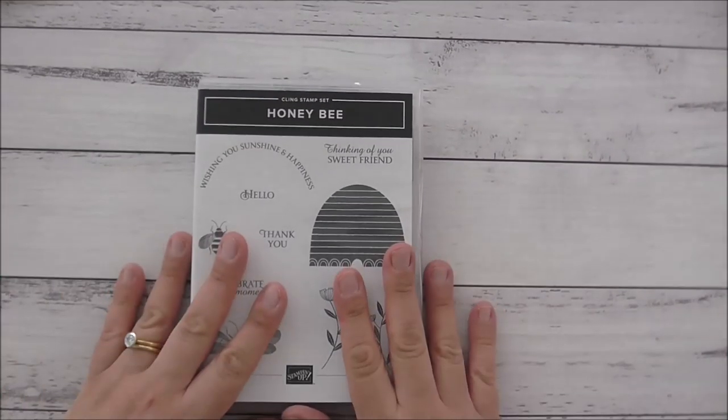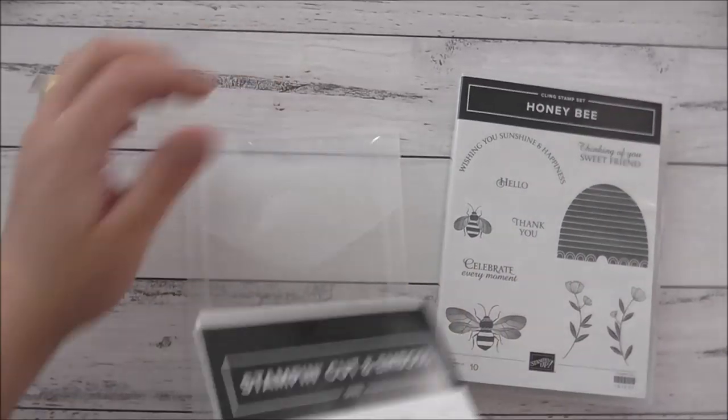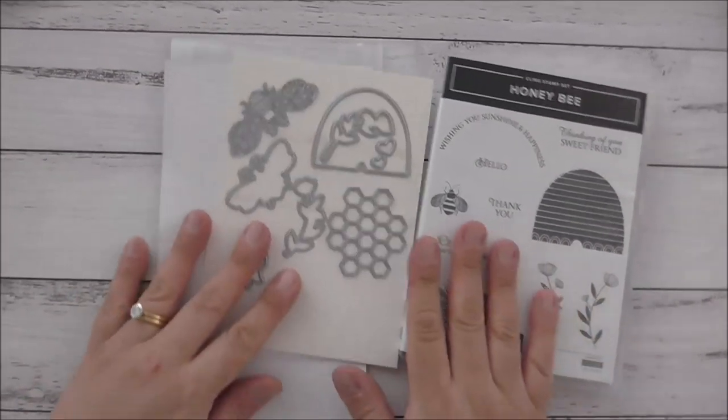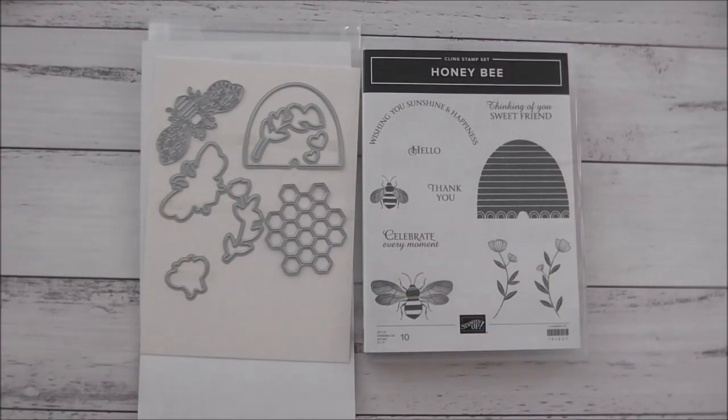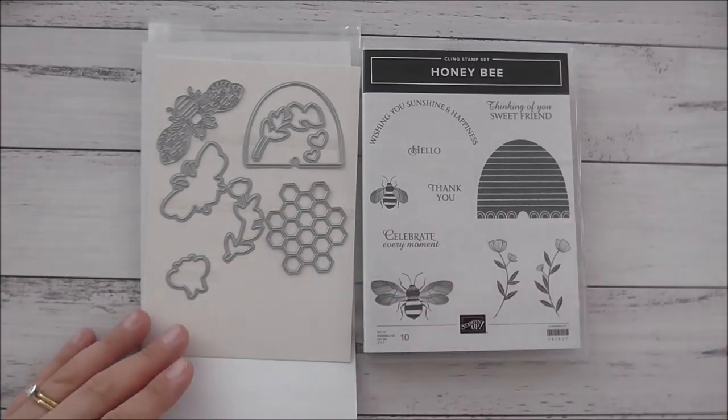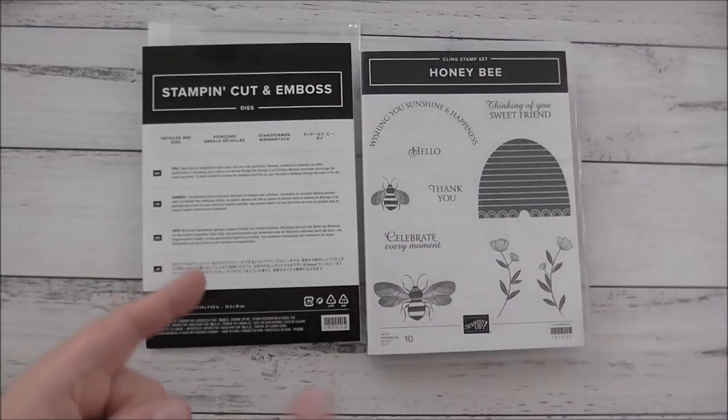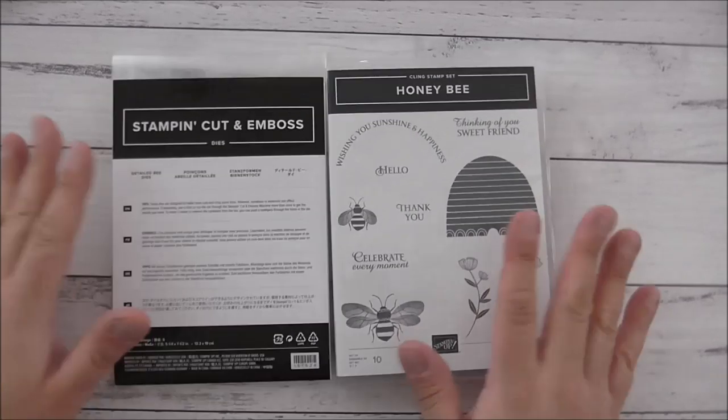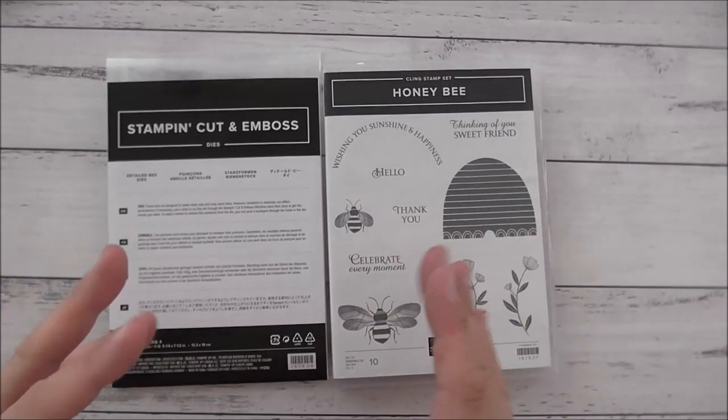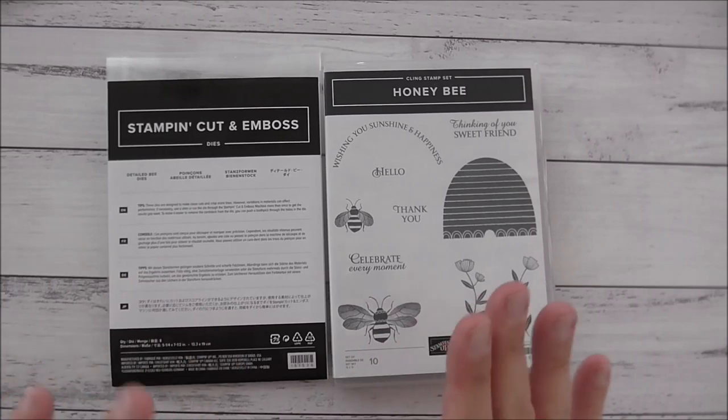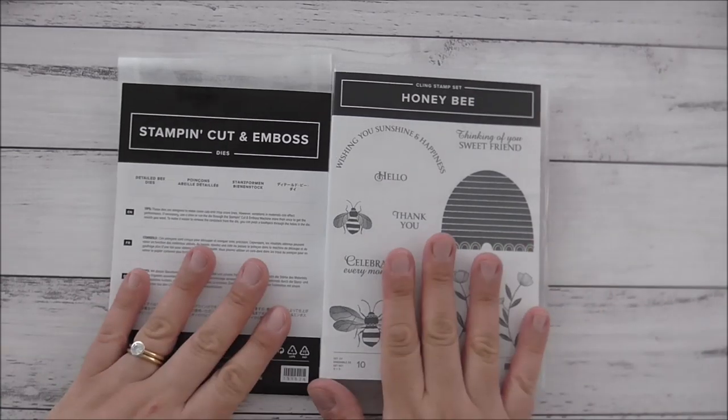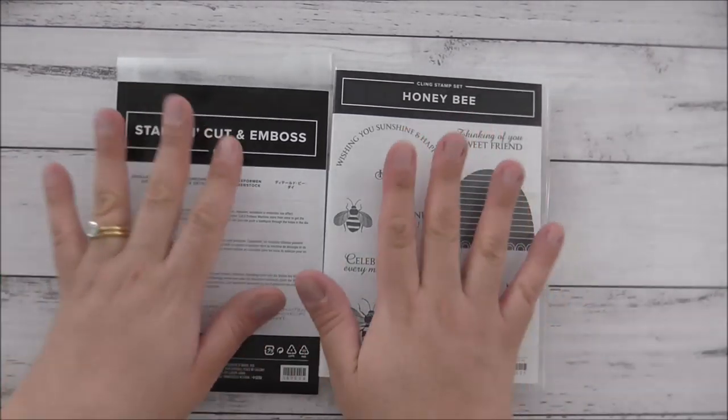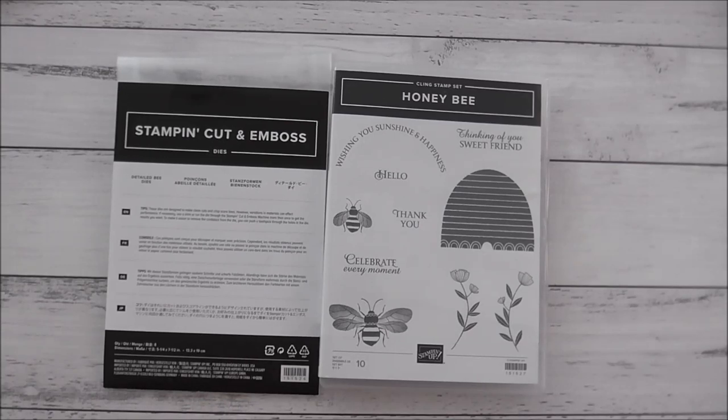I'll be using the Honey Bee stamp set and the Detailed Bee dies. These bundle together and you can get 10% off when you use the combined bundle item number, or you can buy the items separately. If I were you, I would go for the bundle because when they're first released in a catalogue they only have that one time special bundle price of 10% off.